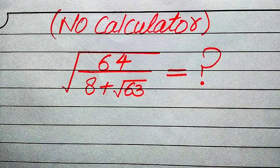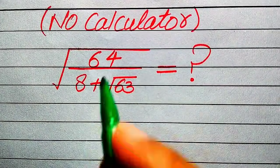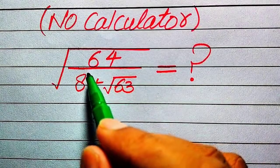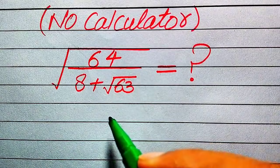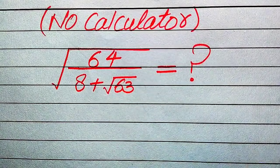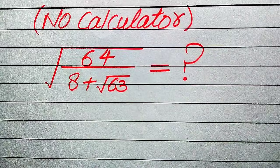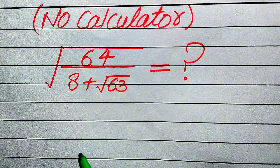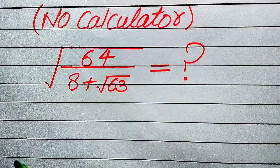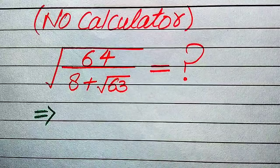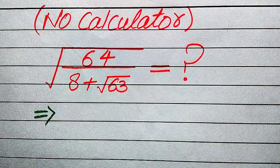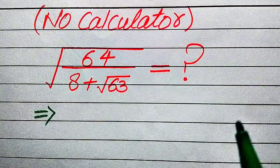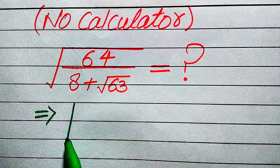Hello everyone. How to simplify this algebraic expression: 64 divided by 8 plus square root of 63, and its whole square root. We write this algebraic expression into simplified form. Note that a calculator is not allowed in this problem, so we need to show all working on paper. We solve this step by step.